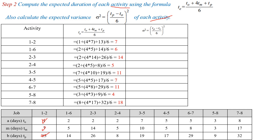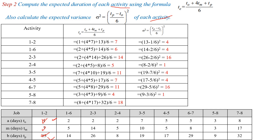Activity 7 to 8 TE = 18. Next, find sigma squared for all activities using sigma² = ((TP - T0)/6)². For activity 1 to 2: (13-1)/6 = 2, squared = 4. Similarly: 1 to 6 → 4; 2 to 3 → 16; 2 to 4 → 1; 3 to 5 → 4; 4 to 5 → 4; 6 to 7 → 16; 5 to 8 → 1; and 7 to 8 → 16.